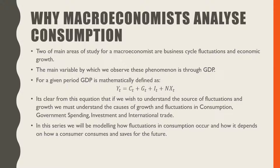Two of the main areas of study for a macroeconomist are business cycles, fluctuations, and economic growth. The main variable by which we observe these phenomena is through GDP. For a given period's GDP, this is mathematically defined as Yt is equal to C plus G plus I plus Nx.